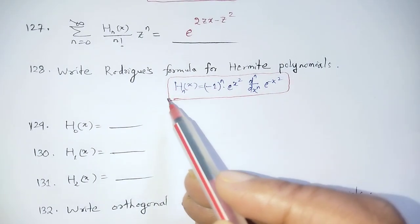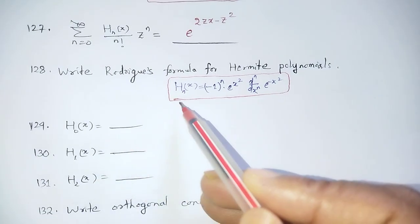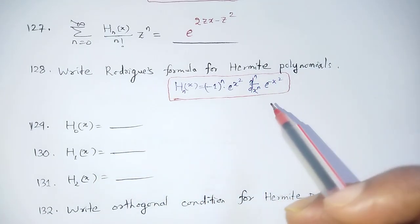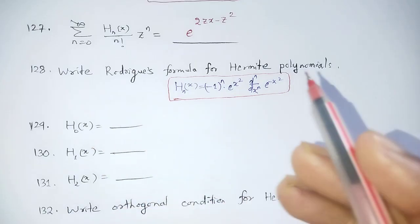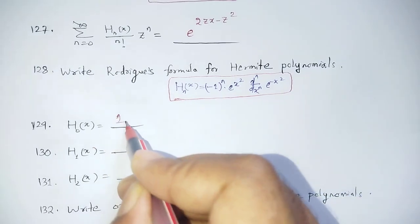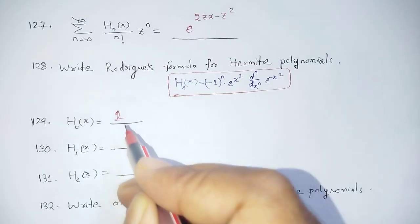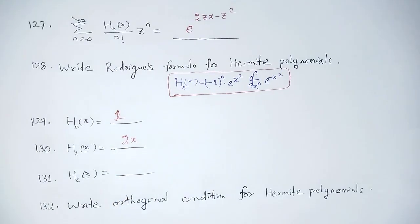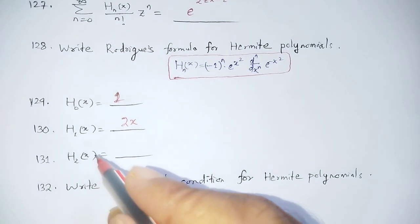Using n=0, 1, 2 in the formula: H0(x) = 1, H1(x) = 2x, H2(x) = 4x² - 2. These are the standard values of Hermite Polynomials you should remember.